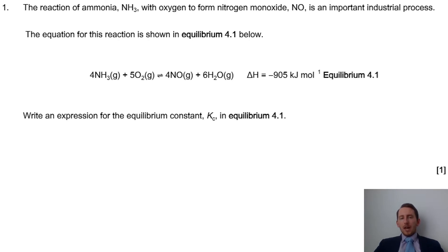So in this instance, we'd have square bracket around the NO, and it would be to the power of 4. Water would be square bracket to the power of 6, and then divided by our reactants, NH3 would be square bracket to the power of 4, then oxygen square bracket to the power of 5. Making sure we have those state symbols in there as well, but that's what we need to get for that first mark there.